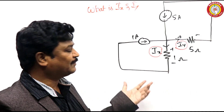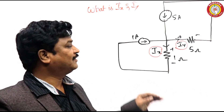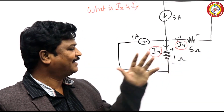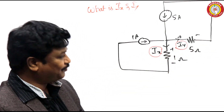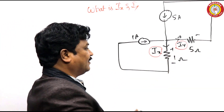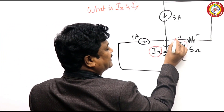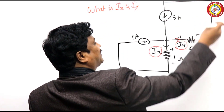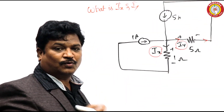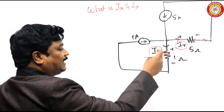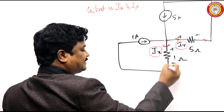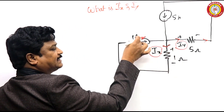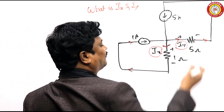Sometimes we are going to waste our time thinking about how many incoming currents, how many outgoing currents - it is all not necessary. Simply see here: this is the direction of current, same current is in the same branch. We don't want to apply anything here. Similarly here also: same branch, 1 ampere. So Ix equals 1 ampere, Iy equals 5 amperes.